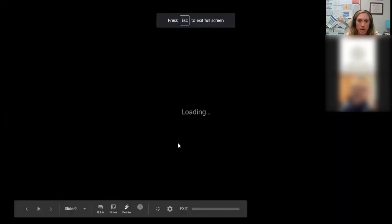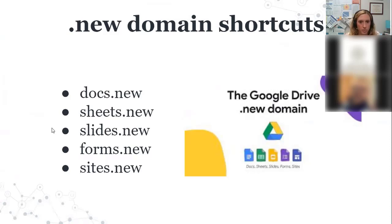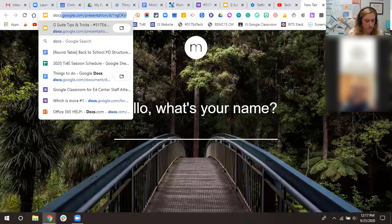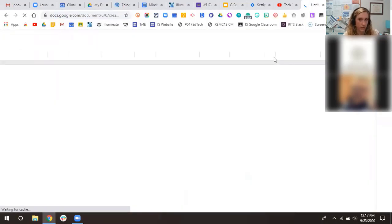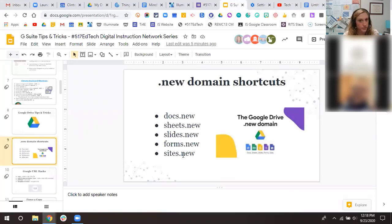Jumping to Drive tips and tricks. The first is domain shortcuts. If you don't want to go to File > New or click New in Drive, you can just go to a new browser window and type the name of the tool followed by .new. For example, docs.new gives you a blank Google Doc. You can do the same with sheets.new, slides.new, forms.new, and sites.new — just the name of the tool dot new and you're in good shape.